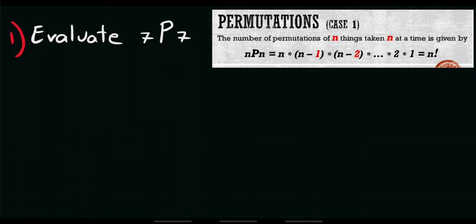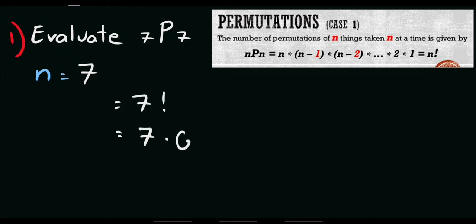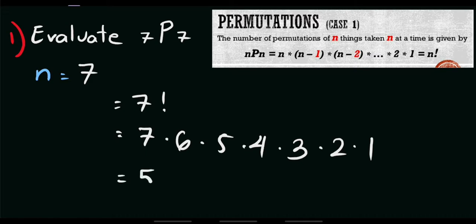For example, number 1: say we are asked to evaluate the permutation of 7 taken 7 at a time. As you observe, we have this value of n and that is equal to 7. Since this set of numbers are equal, automatically we will use the concept of factorial. So, we will use 7 factorial for this problem. We have the permutation of 7 taken 7 at a time equals 7 factorial, or 7 times 6 times 5 times 4 times 3 times 2 times 1, which equals 5040. So, that is the value of our first problem.